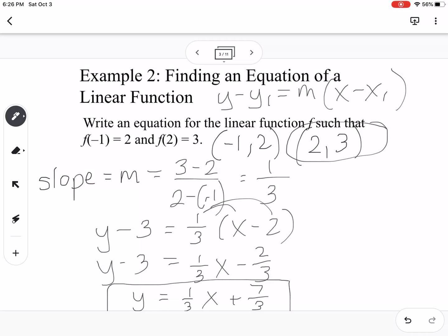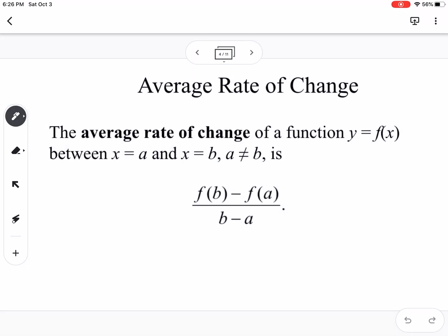So that's what we do if we have two points: we find the slope, we put it into point-slope form, and then we distribute and turn it into slope-intercept.